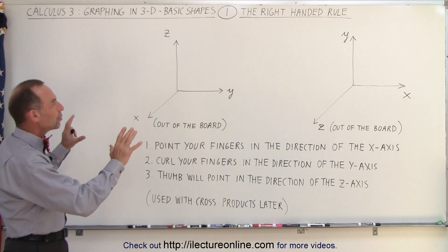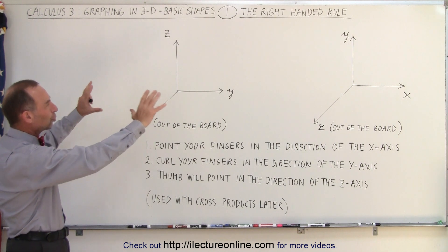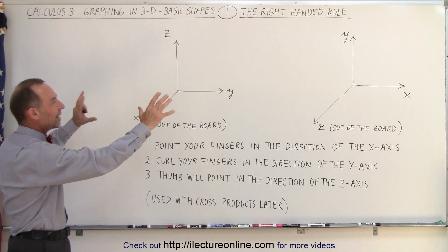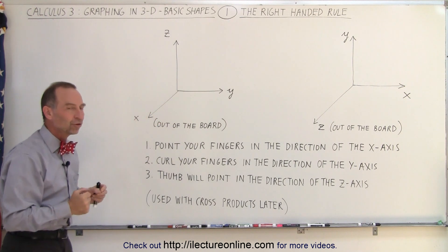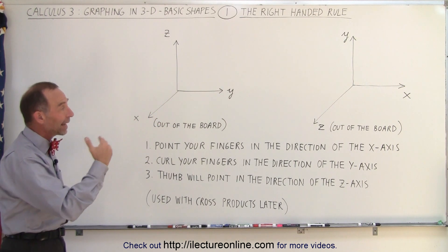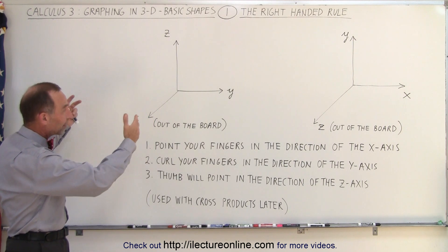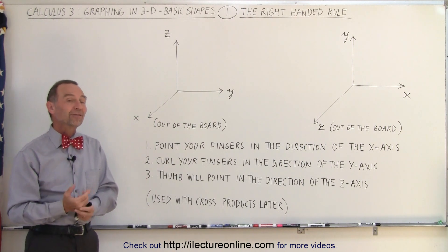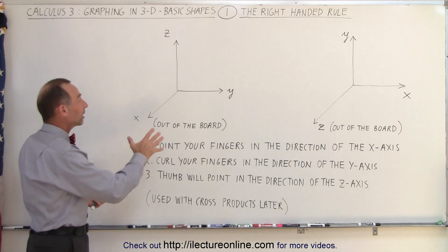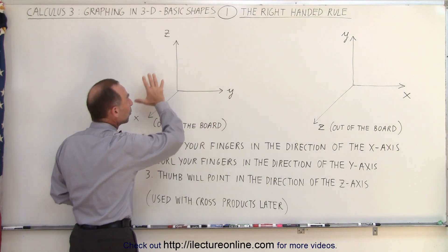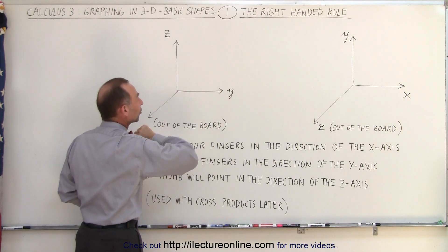Now, what we want to do here is use the right-hand rule to show that these are exactly the same type of representation of three-dimensional space. We have the x-axis, the y-axis, and the z-axis, but at first they don't appear to be the same. In most calculus books, this is the most common way of representing three-dimensional space.